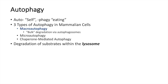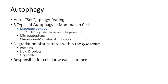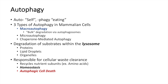Nevertheless, all types of autophagy have one thing in common, and that is the degradation of substrates within the lysosome, whether those substrates be proteins, lipid droplets, or organelles. Because it is a process of degradation, autophagy is responsible for cellular waste clearance, so it recycles nutrient subunits such as amino acids, making it critically important in homeostasis. A related process known as autophagic cell death can also occur, making autophagy a critical process during disease.